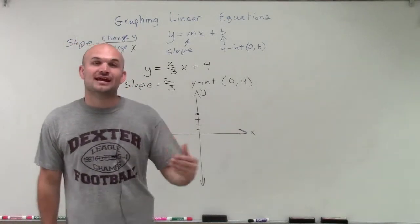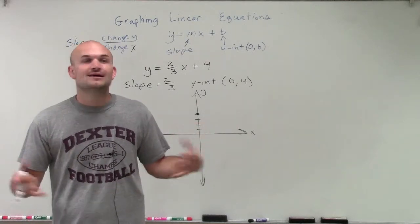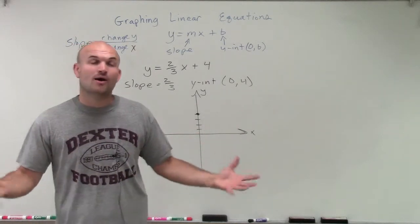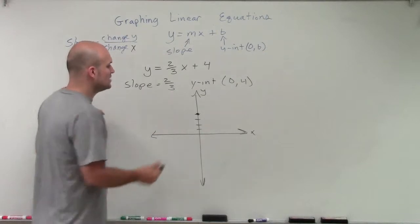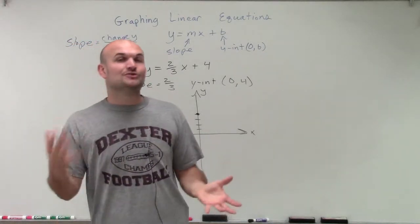So the slope, remember, is the change in y-coordinates over the change in x-coordinates between two points. Now, we can be any two points that we want, but we know that that's going to be the slope. So all I need to do is find one more point to be able to create my line.